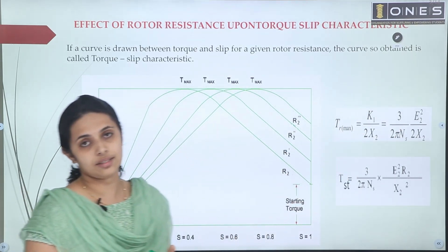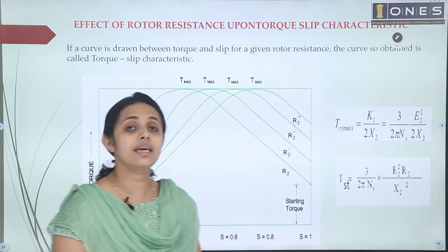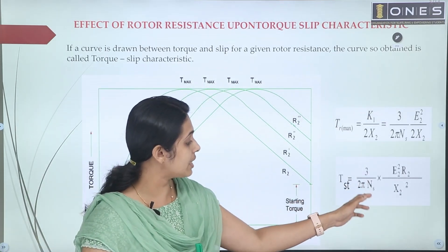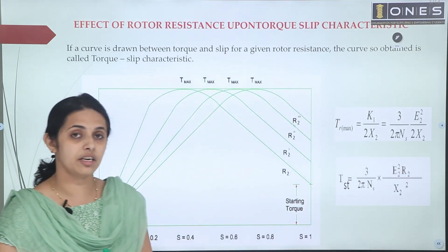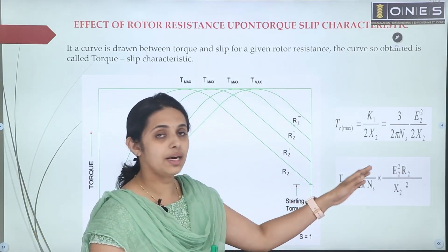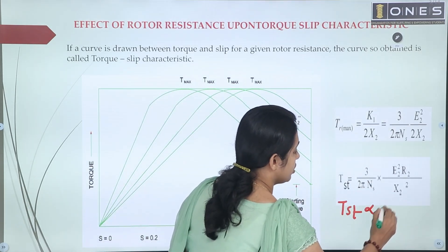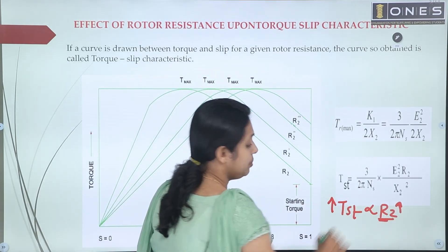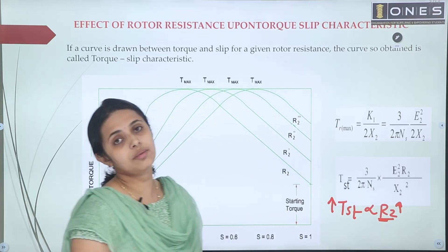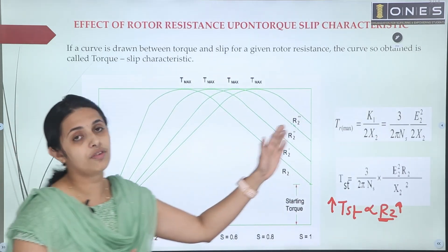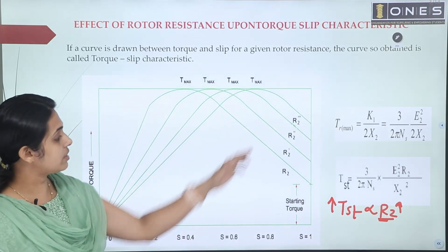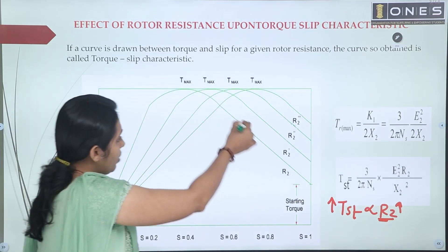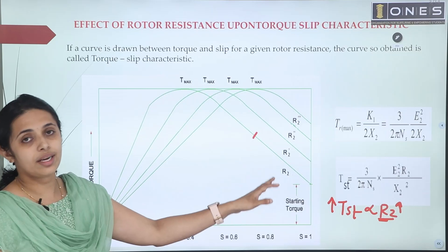The maximum torque is independent of rotor resistance. The value of the maximum torque remains the same. The starting torque is not independent of rotor resistance. Now, considering the slip at which maximum torque occurs — with the normal rotor resistance R2, we discuss the slip at which maximum torque is developed.